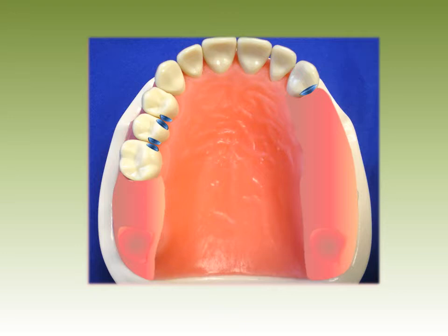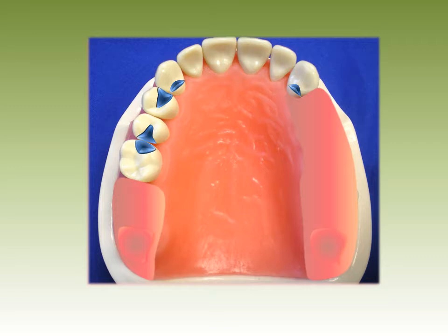Next we want to place rest seats. We'll consider potential fulcrum lines and clasp types here. Let's use the double occlusal rest seat on the mesial of the molar and distal of the bicuspid. We'll extend the rest on the bicuspid to provide some stabilization. We'll also rest the first bicuspid with an extended occlusal rest, to provide resistance to lateral movement of this periodontally weakened tooth.